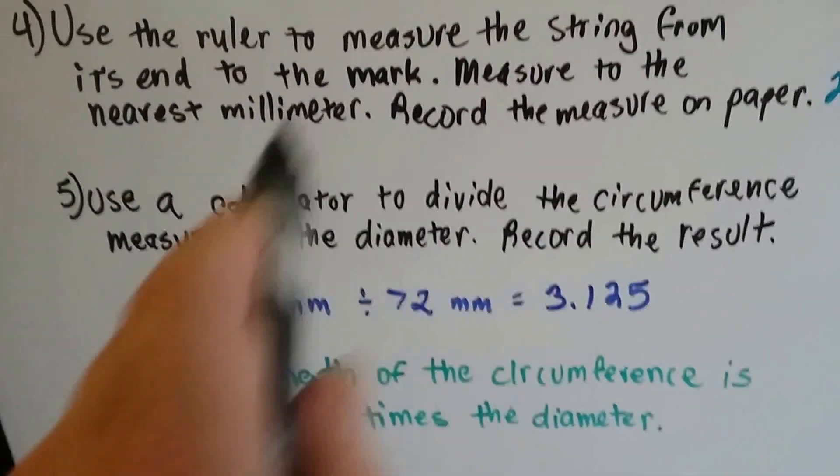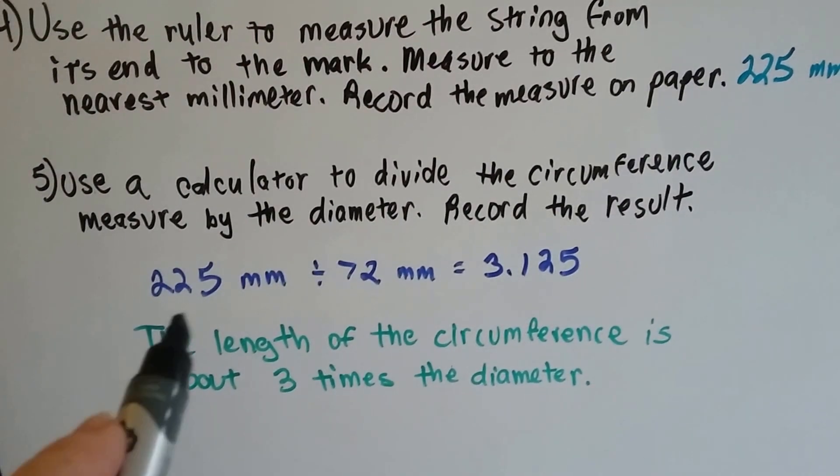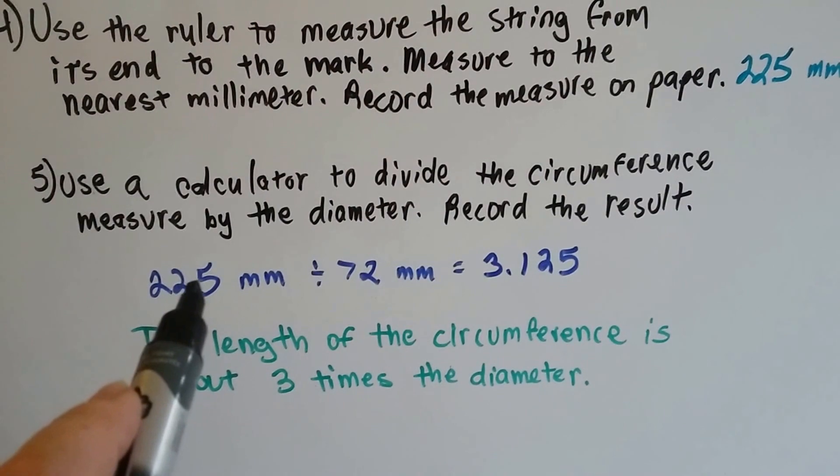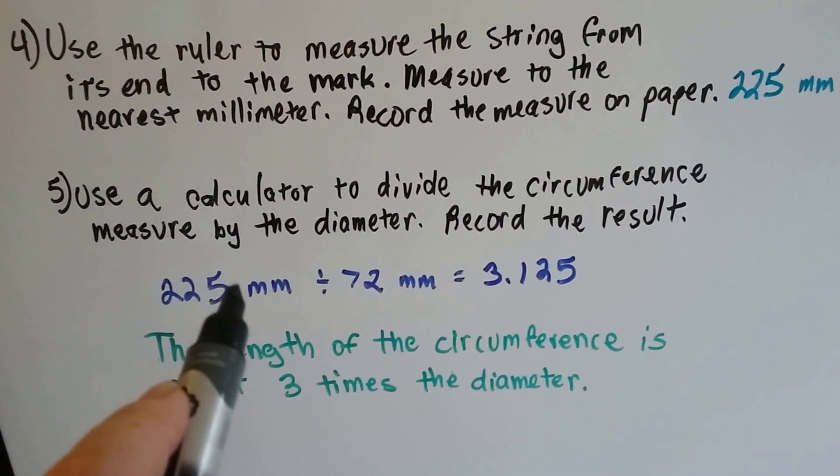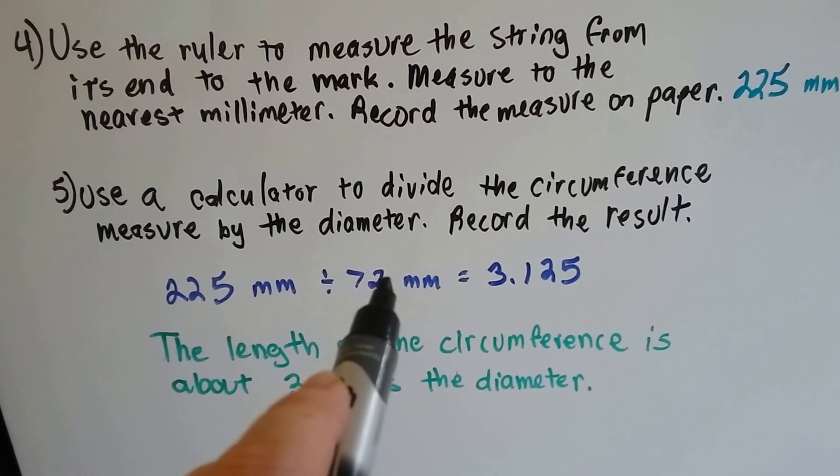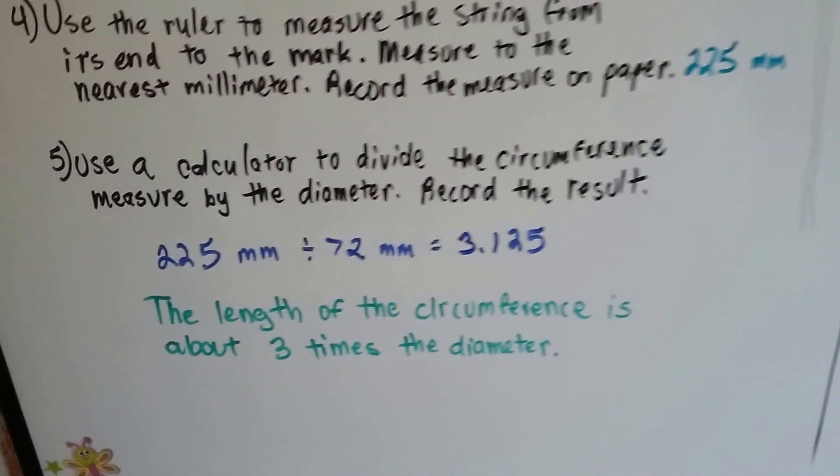So the length of the circumference going all the way around the circle is about three times the diameter. This was the length of the string. This was my diameter. And when I divided the diameter into the length of my string, I got 3.125. So it was about three times around.